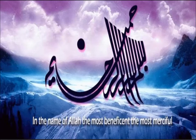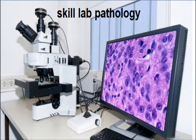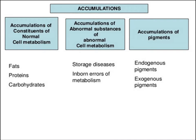In the name of Allah, the most beneficent, the most merciful. In skill pathology today we are going to discuss intracellular accumulations. Intracellular accumulations are of three types: accumulation of constituents of normal cell metabolism, accumulation of abnormal substances of abnormal cell metabolism, and accumulation of pigments, which are colored substances.